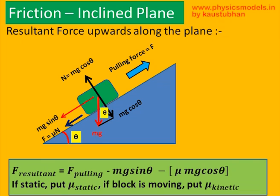Coming to the second law of motion, the pulling force acting on the block will move it upwards only if the upward force is greater than the backward forces. The resultant force is the pulling force minus mg sin theta minus mu times mg cos theta. That resultant force is the one acting on the rope and also on the wooden ball, and we'll come to that in subsequent chapters.